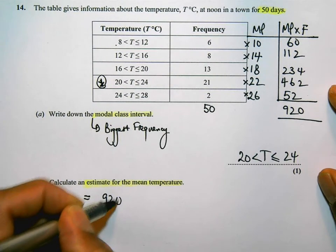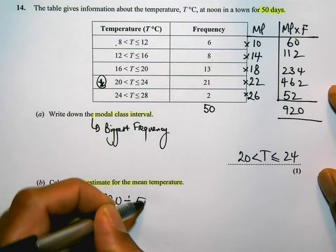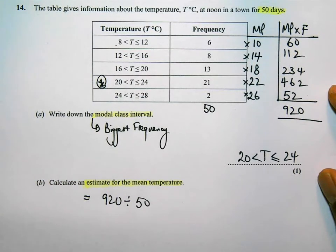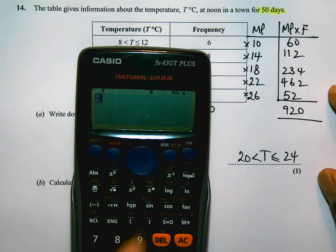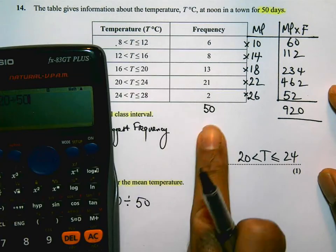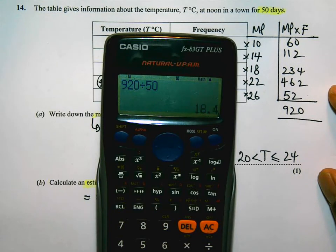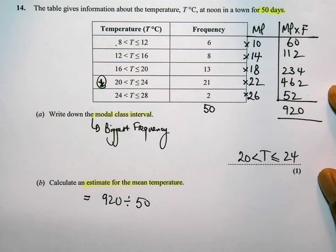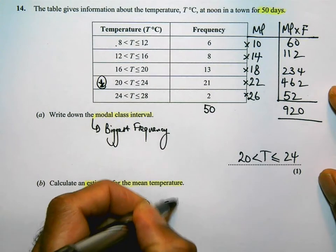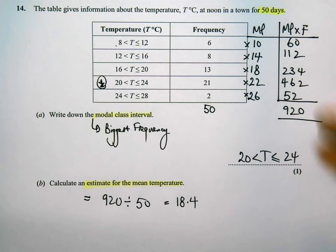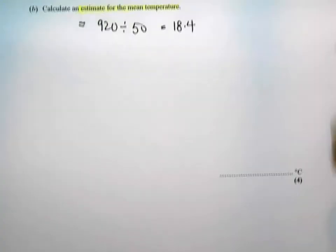If I do that on my calculator, 920 divided by 50, and the 50 comes from the total frequency here, that's going to give me 18.4. And that's what I will put in my answer space for that part of the question. 18.4.